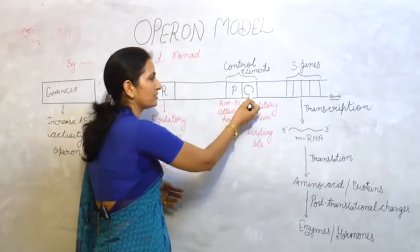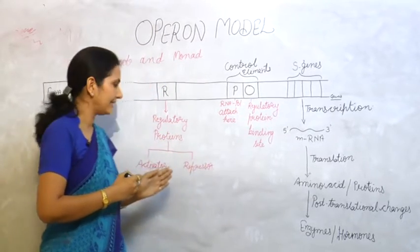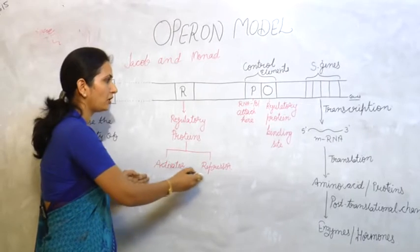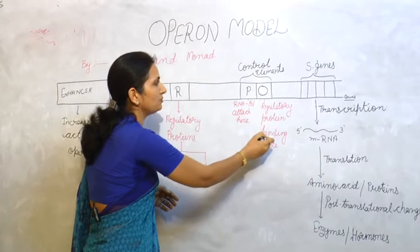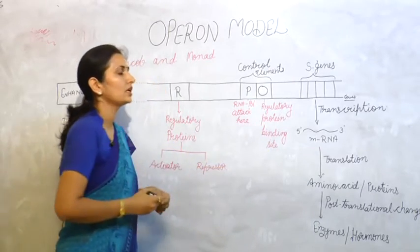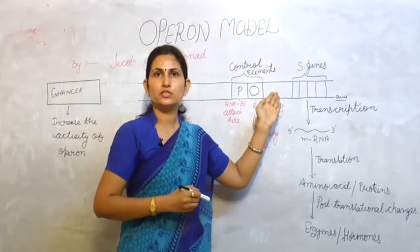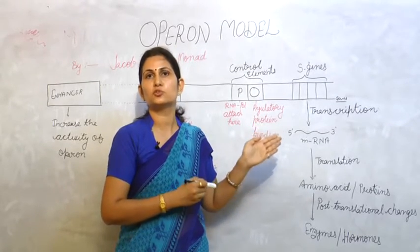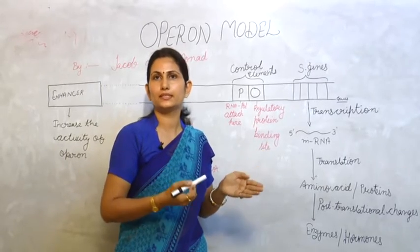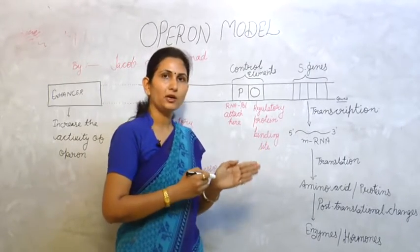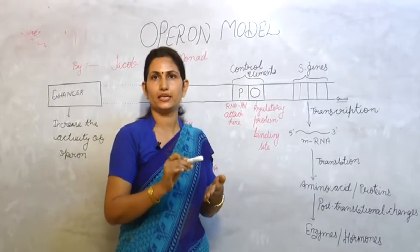Next is the operator. On the operator, the regulatory proteins — that is either the activator or repressor — attach here. So basically this is the regulatory protein binding site. Next we have the structural genes. The number of structural genes may vary from 3 to 5 or more. In the lac operon we have three structural genes: Z, Y, and A.